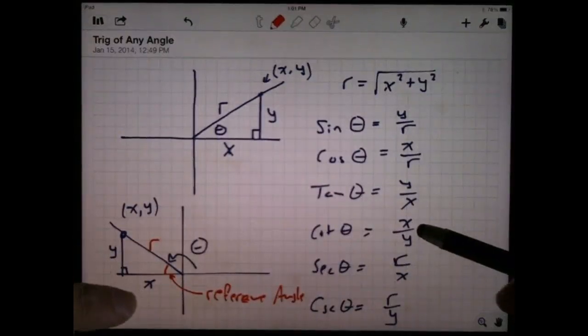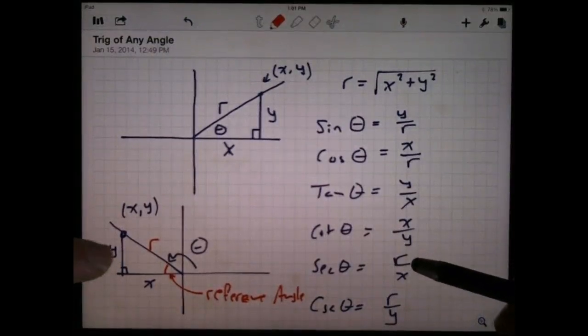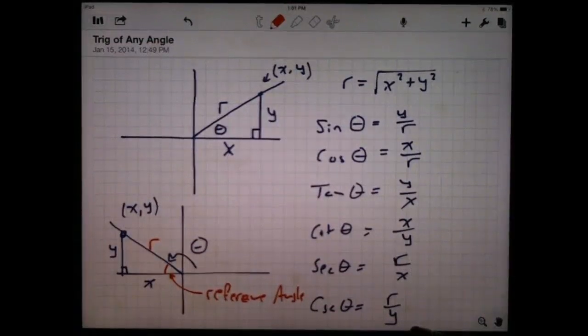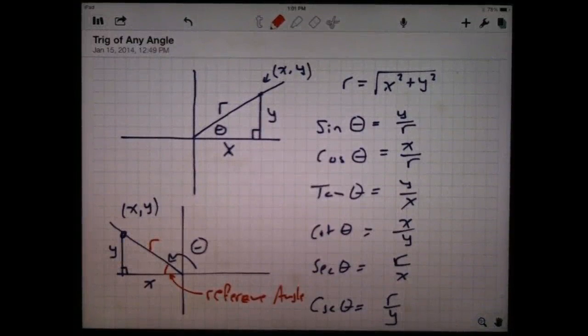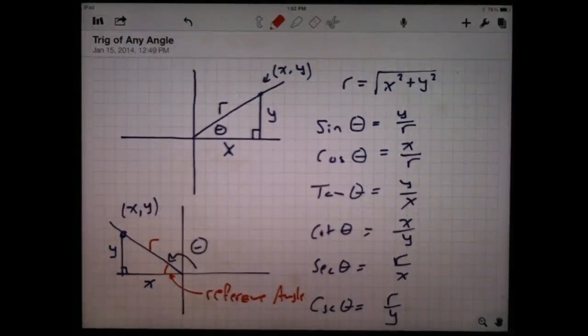Cotangent, x over y, that's negative because I got a negative x and a positive y. Secant would be negative because r is positive and x is negative over here. And cosecant would be positive, r is positive, y is positive. So in the second quadrant, you had some positives and some negatives, but it really depends on whether x or y is positive or negative. And in this case, x is negative.